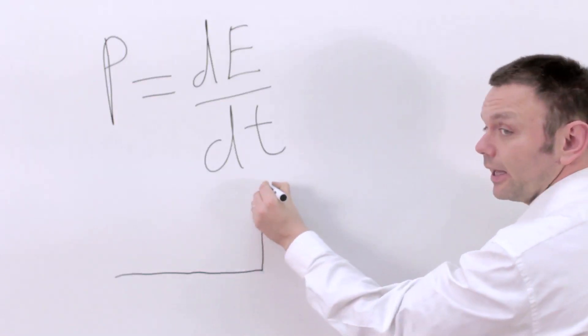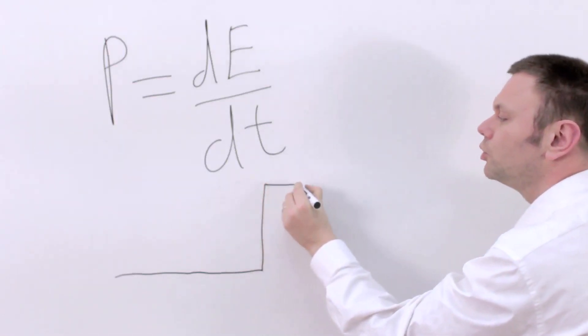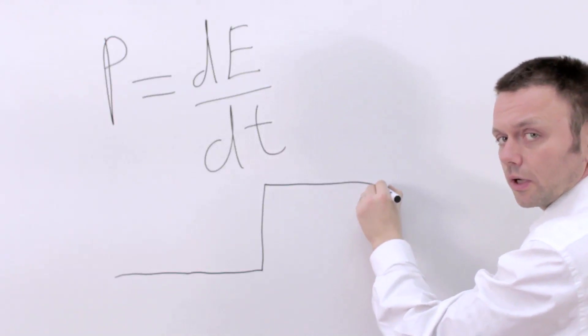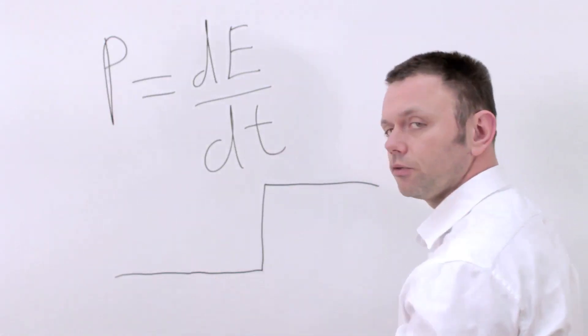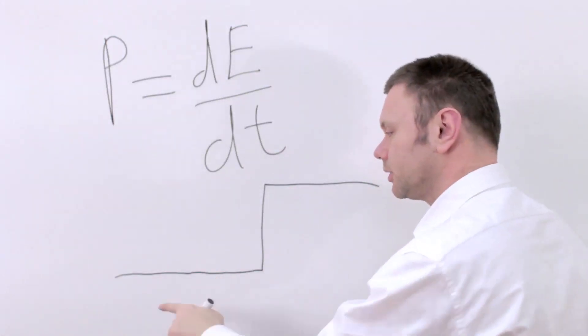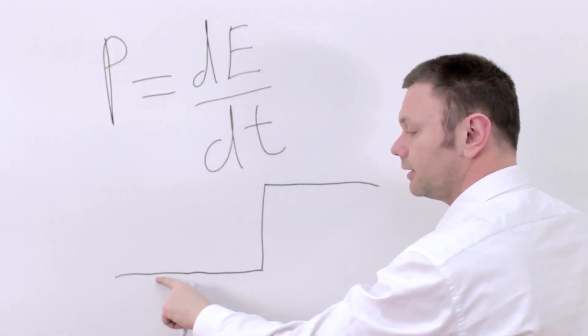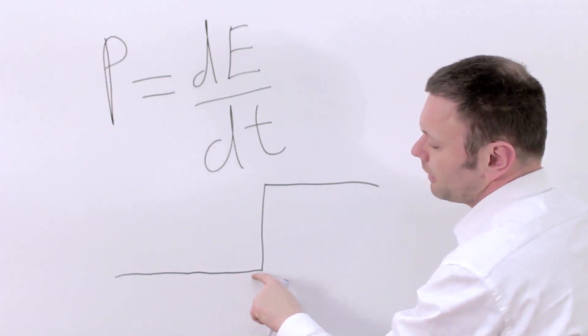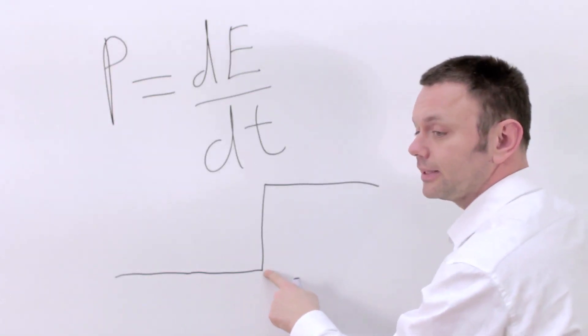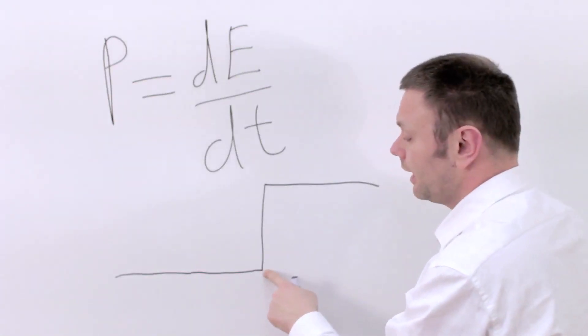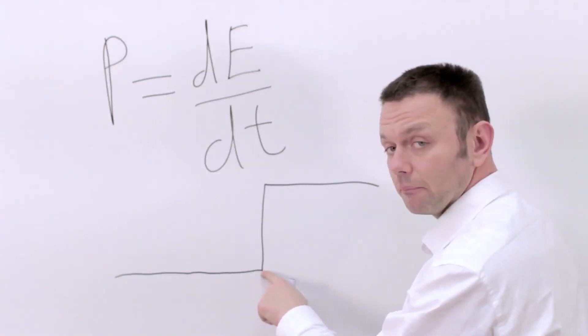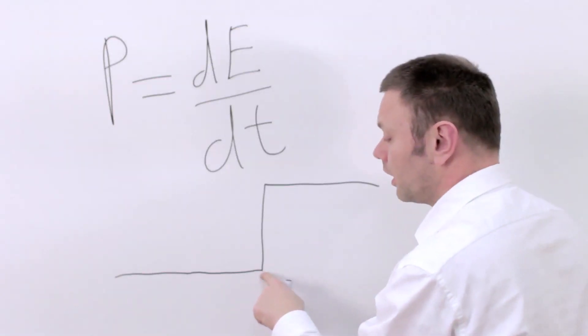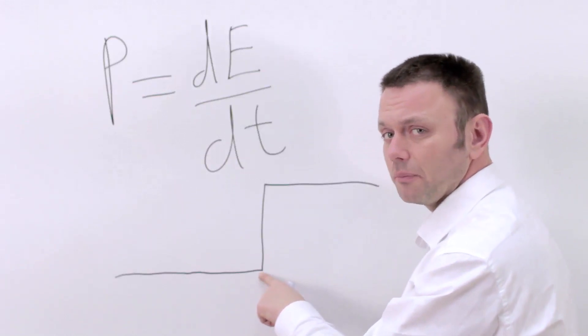So if we had an energy graph - so energy was constant for a long time and then it changed instantaneously in zero time to a new level, okay? What is the rate of change of energy in this particular case? So here while energy is constant, its rate of change is equal to zero because energy is not changing. But then energy jumps instantaneously to a new state, and during this infinitesimal time period, the power - the rate of change of energy - actually becomes infinite.